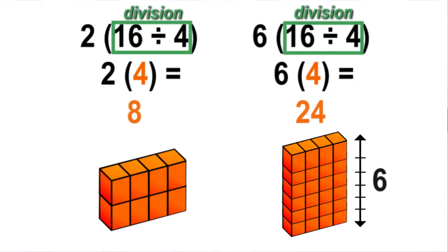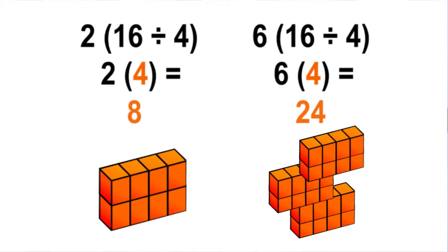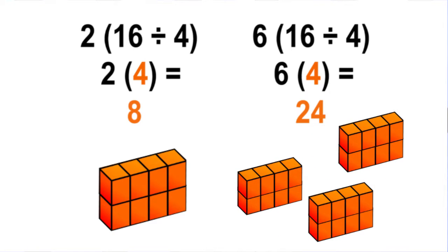Both expressions begin by dividing 16 by 4, and both expressions have at least one group of 2 rows of 4. The second expression has 3 times as many units as the first expression. This is because when a quantity is multiplied by 6, it is 3 times as many as the same quantity multiplied by 2.